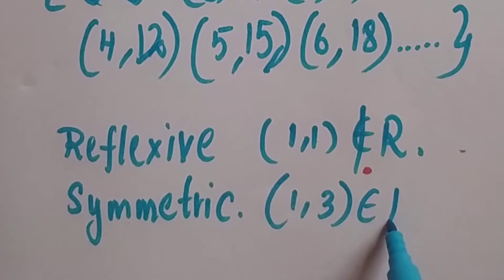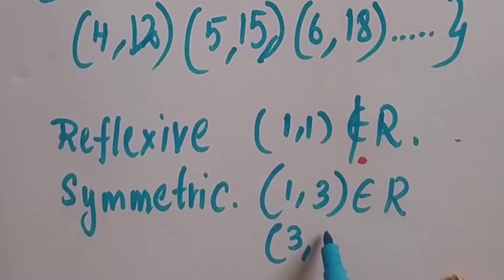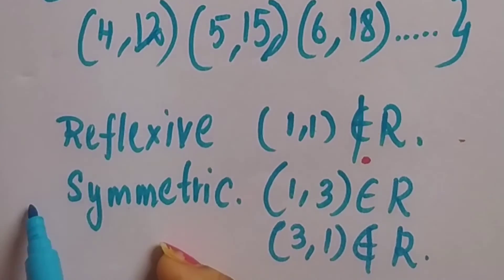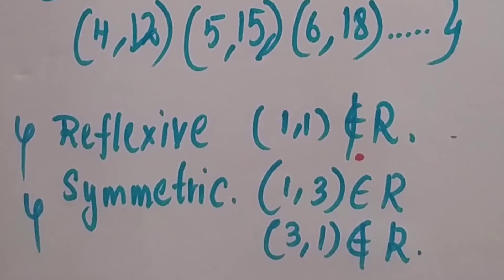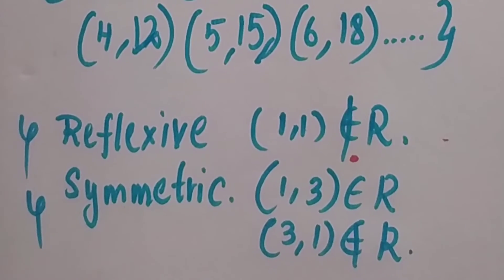1, 3 belongs to R, but 3, 1 does not belong to R. So hence it is not symmetric as well.